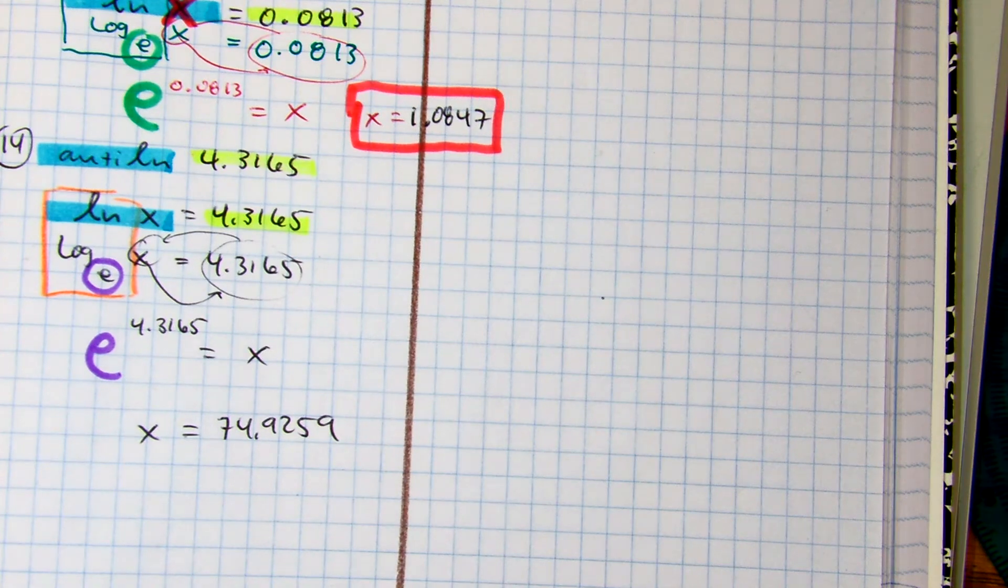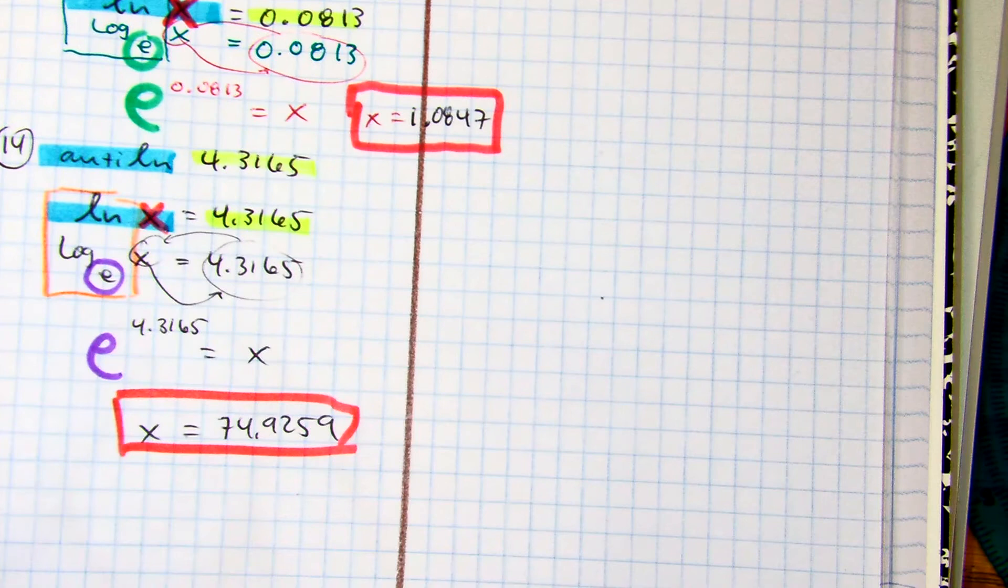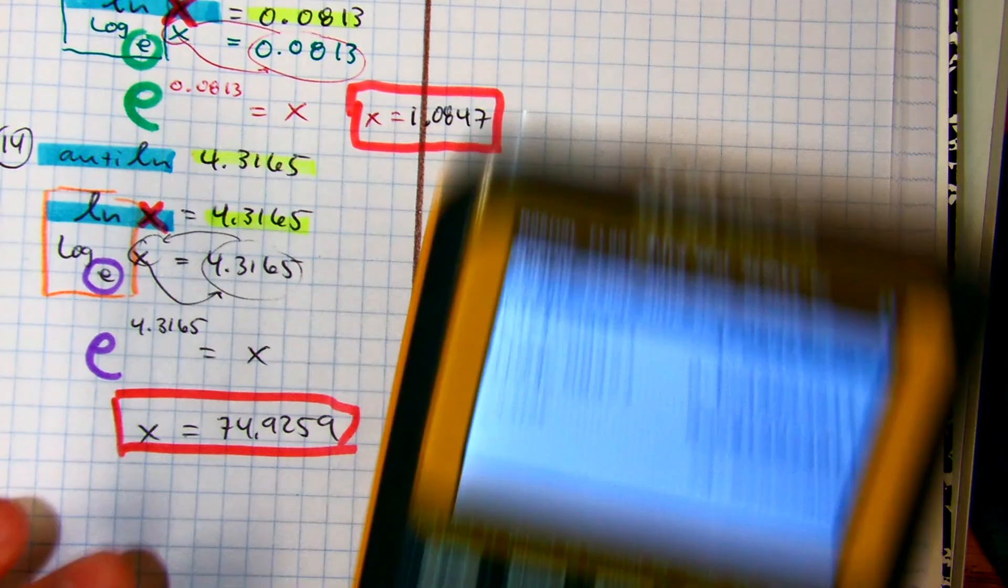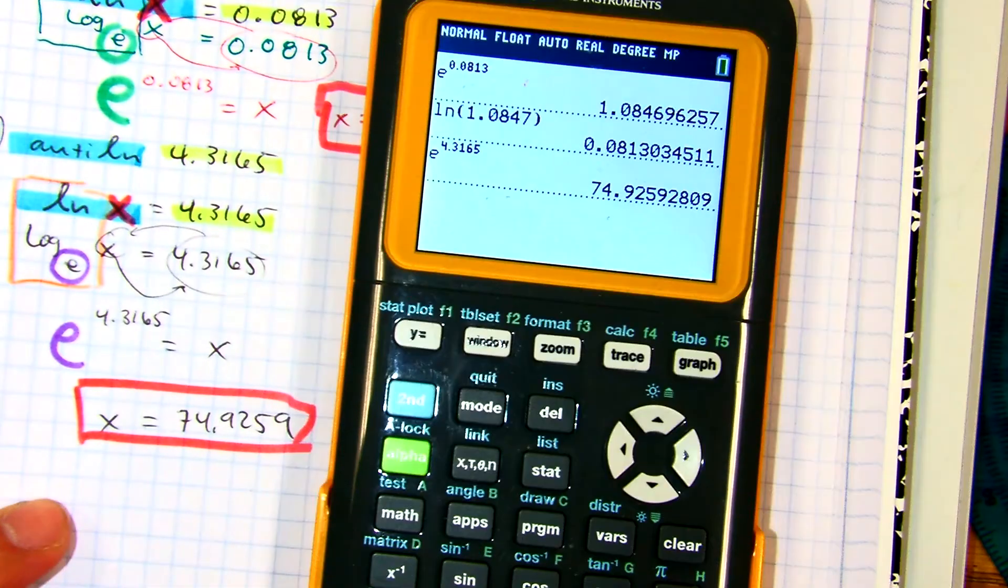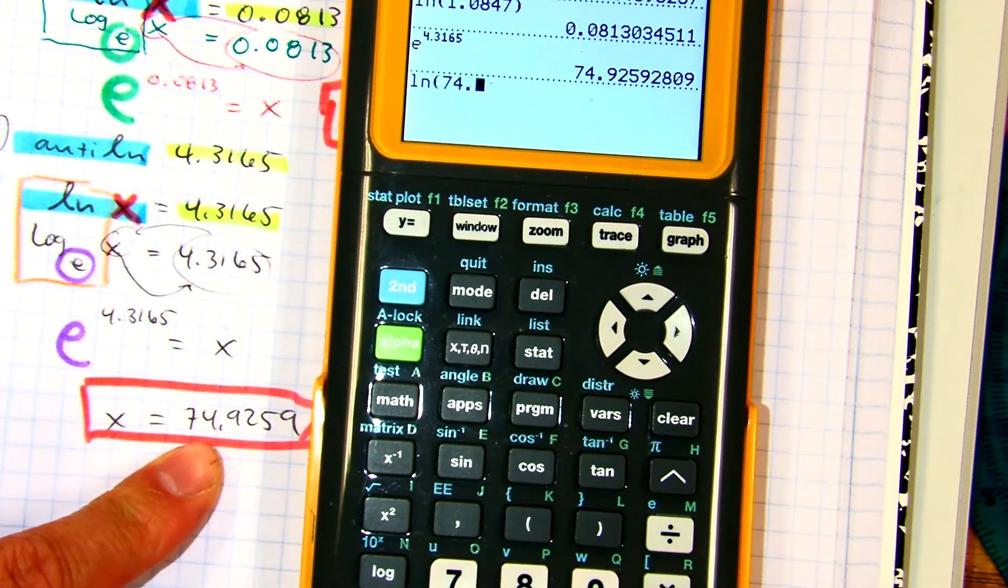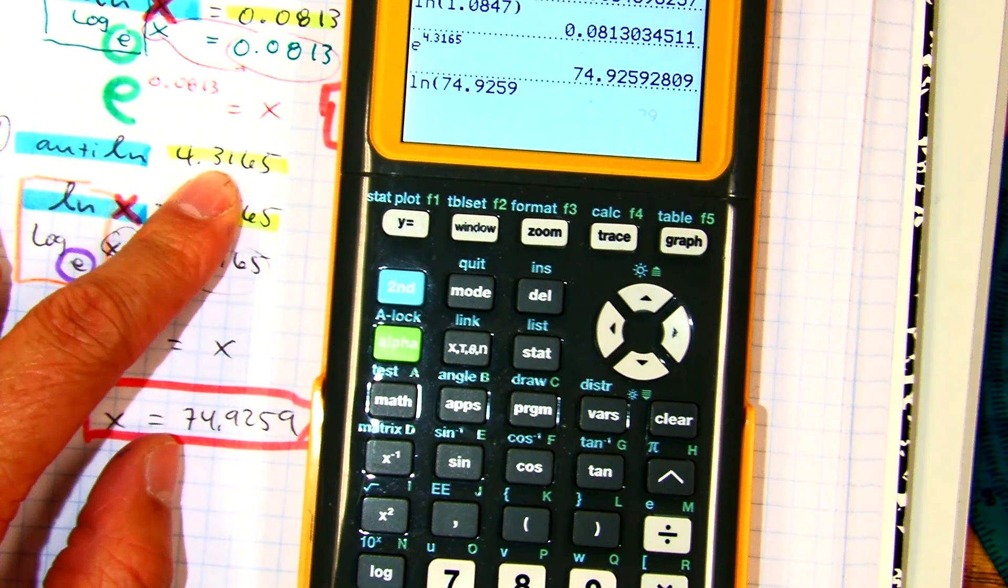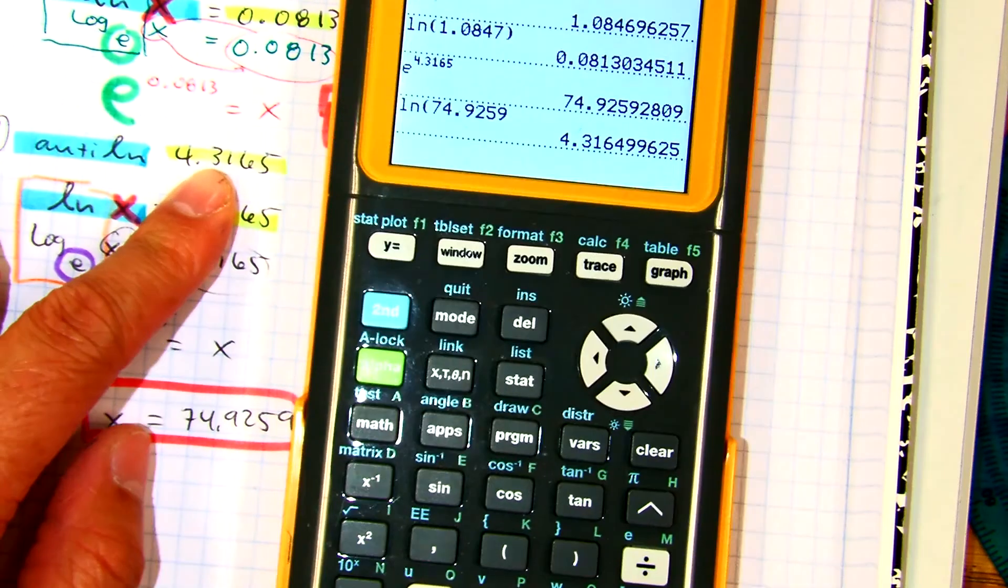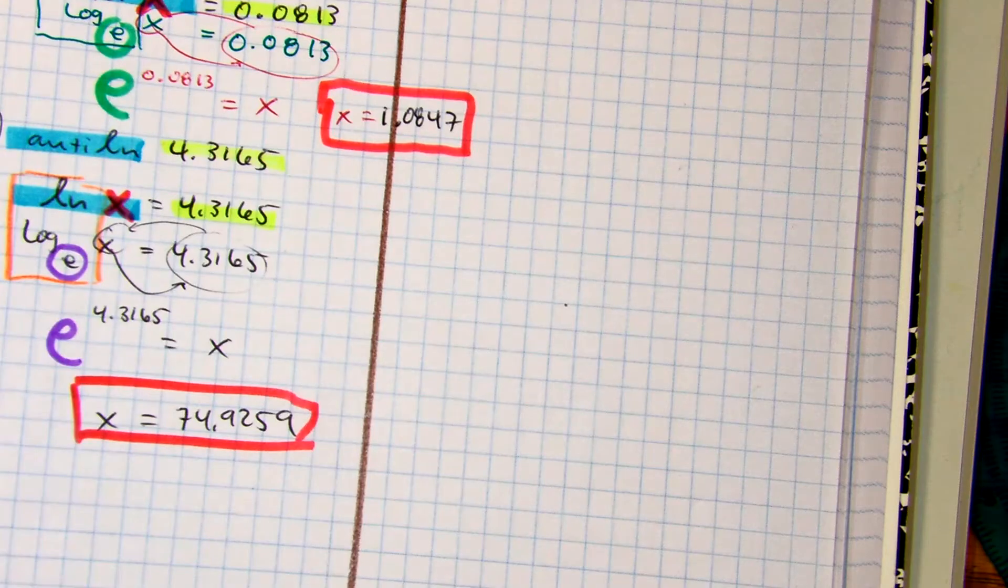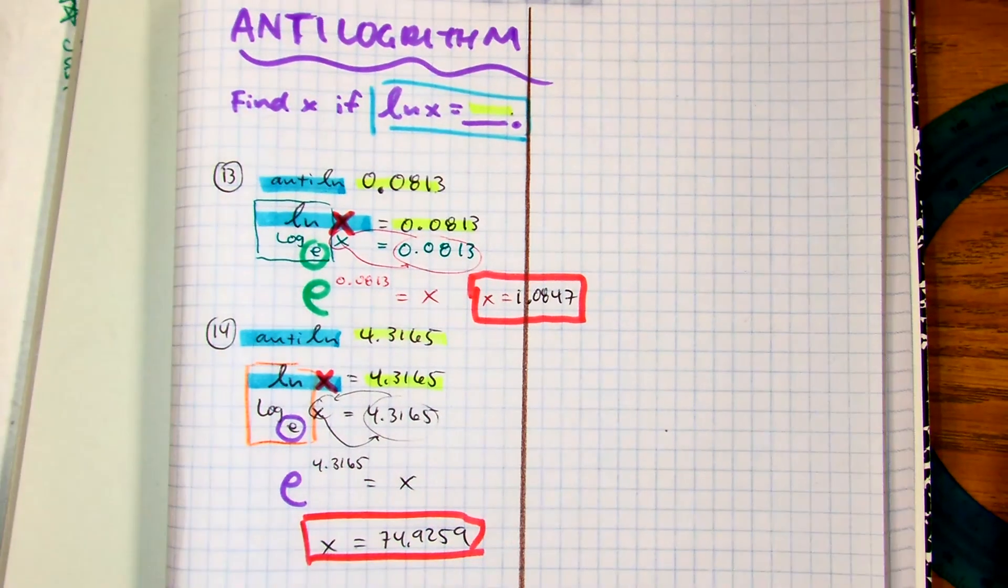And you can double check your answer by putting it back into x here. Press natural log of 74.9259. So natural log of 74.9259, and we should get this number. Boom. Nice. Two examples, antilogarithms. Thank you.